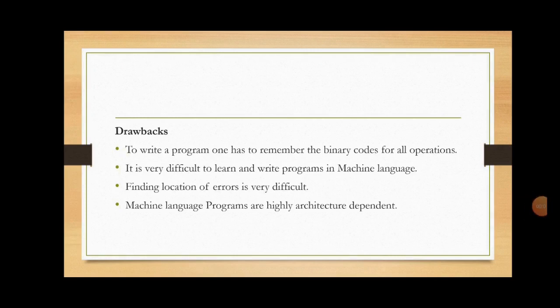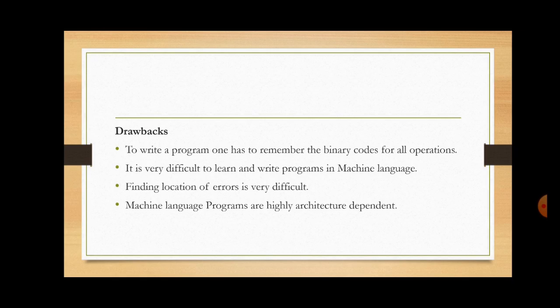The major drawbacks of machine level language are as follows. In order to write a program, one has to remember the binary equivalent of all operations, which is a very tedious task. Hence, it is very difficult to learn and write programs in machine level language. Also, if we make any mistake while writing a program, finding the location of the error is very difficult. Finally, machine level language programs are highly architecture-dependent, meaning a program written on one machine cannot be executed on a machine with a different architecture.